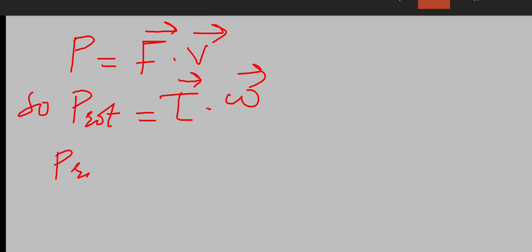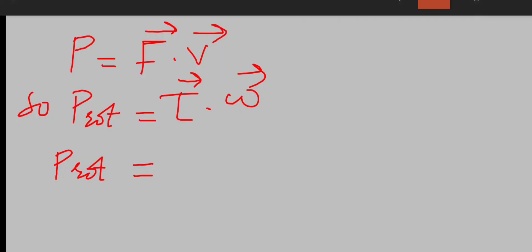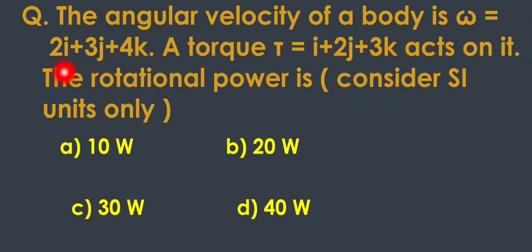The rotational power will be equal to, as the value of torque is given as i plus 2j plus 3k. By putting the values, the value of torque is i plus 2j plus 3k dot the value of omega, means angular velocity, is 2i plus 3j plus 4k.